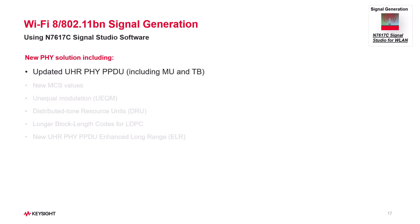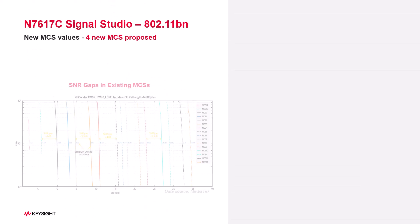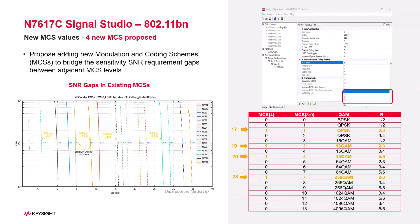Next, let's move to the new MCS values. 802.11BN introduces four new MCS levels to fine-tune the signal-to-noise ratio sensitivity. You will find this in Signal Studio's MCS index menu.